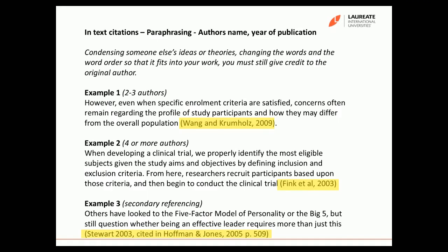Example three covers secondary referencing, which is a little trickier but very important to do correctly. This is when you are citing from a book where that author has referenced from another book or article. For example, Stuart 2003 has used an example found in Hoffman and Jones 2005, page 509. If you've paraphrased what Stuart said as taken from Hoffman and Jones, you need to include information from both authors. So the citation reads: Stuart 2003, cited in Hoffman and Jones 2005, page 509. That is a good example of combining in-text citations for both direct quotes and paraphrasing.